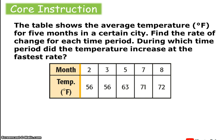The table below shows the average temperature in degrees Fahrenheit for five months in a certain city. Find the rate of change for each time period and determine during which time period the temperature increased at the fastest rate. We're going to find the rate of change between the second and third month, third and fifth, fifth and seventh, and seventh and eighth.